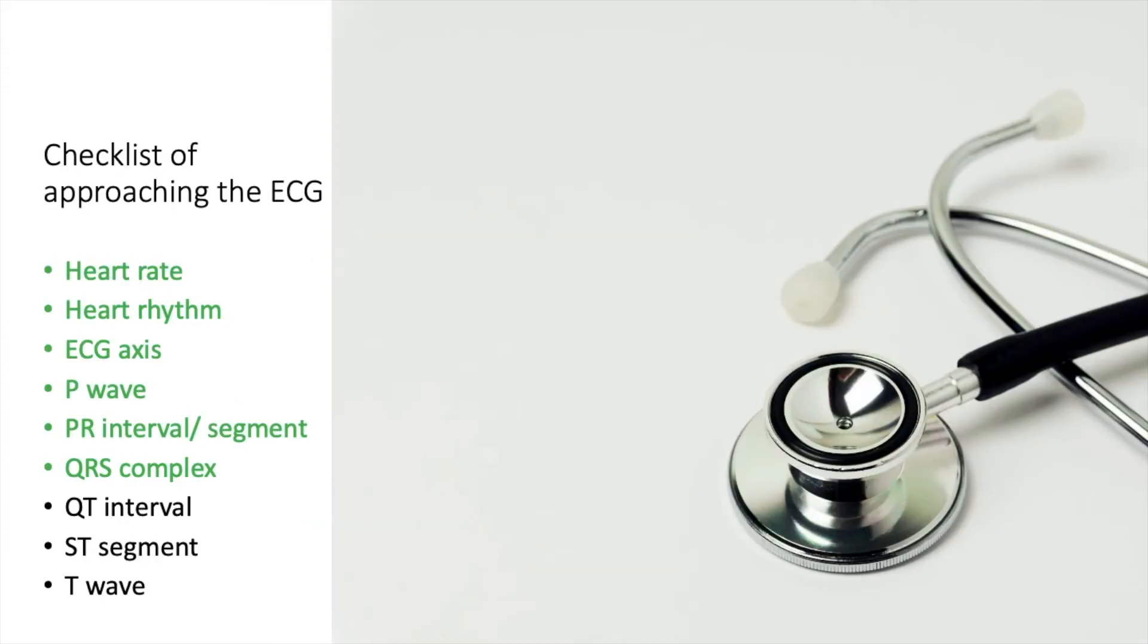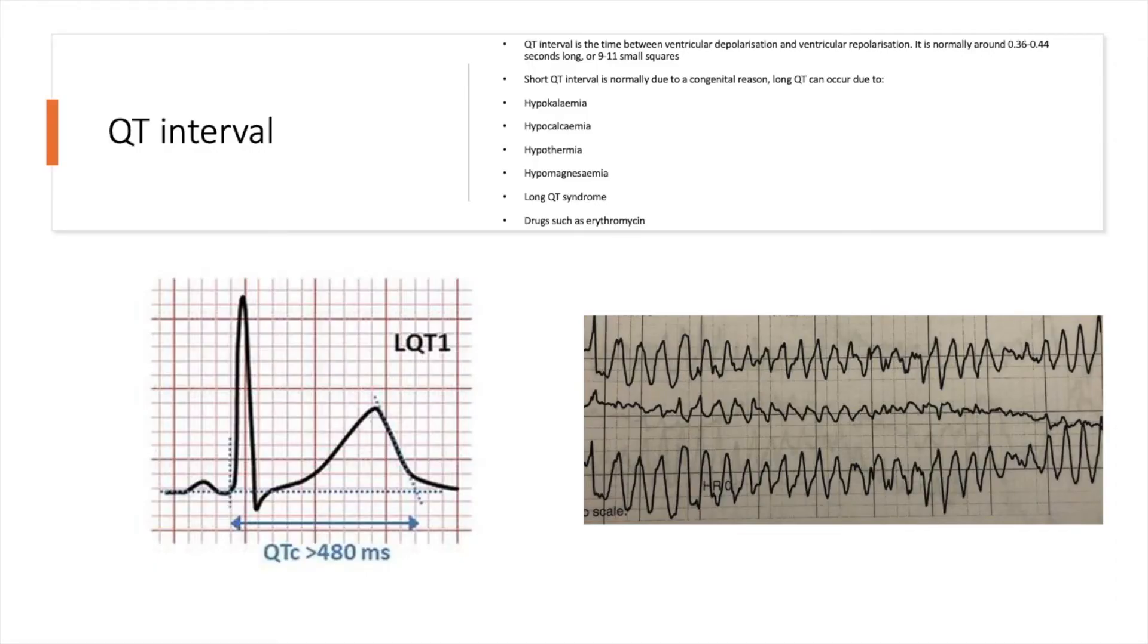The next thing to look at is the QT interval. The QT interval is the time between the start of ventricular depolarization and the end of ventricular repolarization. Normally, it should be between 0.36 to 0.44 seconds long. In other words, it should be between 9 and 11 small squares. The QT interval can be too long or too short, just like a few of the other things we've seen with the ECG. Short QT interval can occur for congenital problems. Short QT syndrome is one of the reasons.